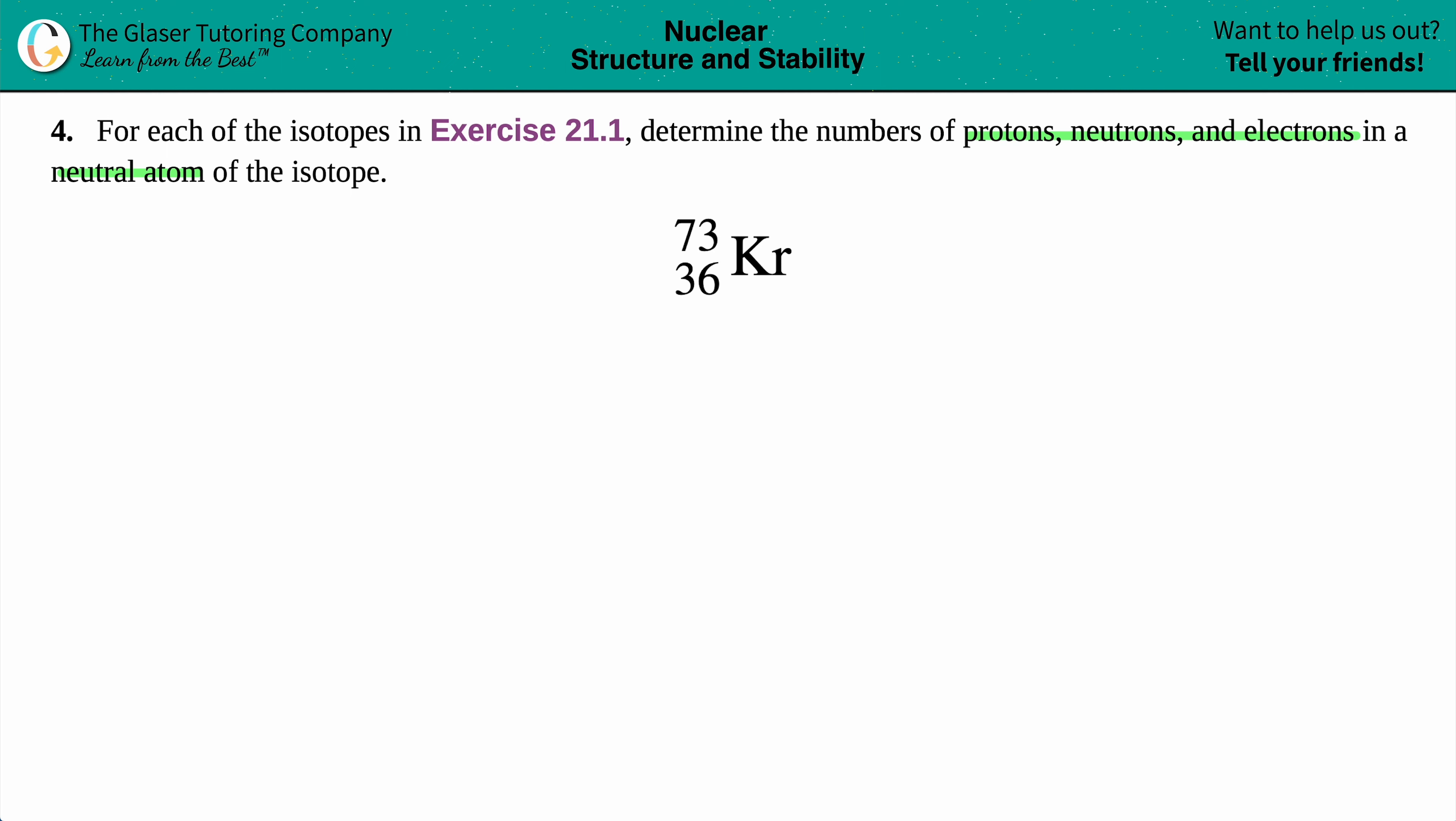In this example we just have to find out the total of protons, neutrons, and electrons. So let's just write it out here: we got protons, neutrons, and electrons.